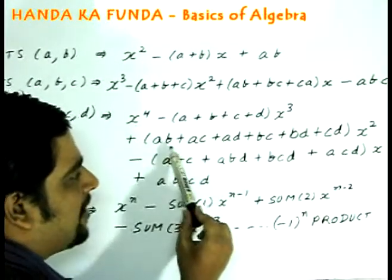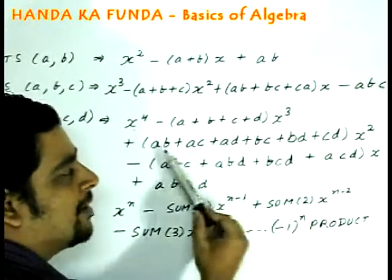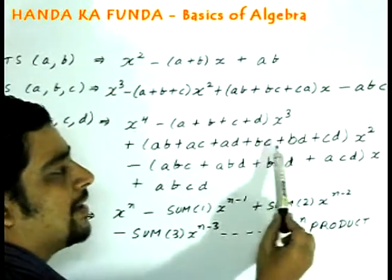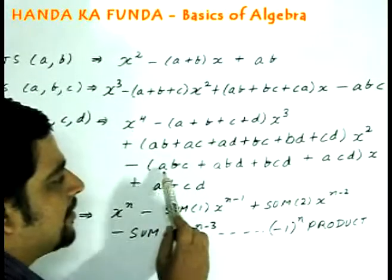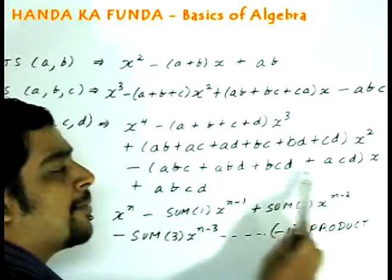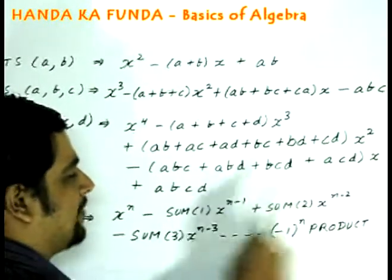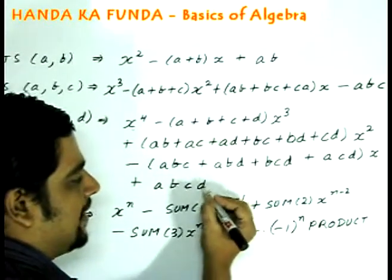Plus ab, ac, ad, bc, bd, cd. Sounds complicated but think about it, this is nothing else but sum of the roots taken two at a time and it forms the coefficient of x². Minus abc, abd, bcd, and acd. What are these? These are sum of the roots taken three at a time with a negative sign and x plus the product of the roots which is abcd.